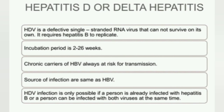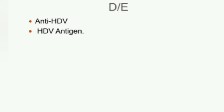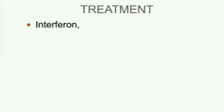Hepatitis D, or Delta Hepatitis, is caused by HDV — a defective single-strand RNA virus that cannot survive on its own and requires Hepatitis B to replicate. The incubation period is 2 to 26 weeks. Chronic carriers of HBV are always at risk of transmission. Sources of infection are the same as HBV. Diagnosis includes anti-HDV and HDV antigen testing, and treatment involves interferon.